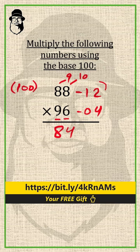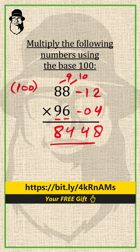And for the second part, you multiply these two complements. 12 times 4 is 48. That's your answer. 88 times 96 is 8448.